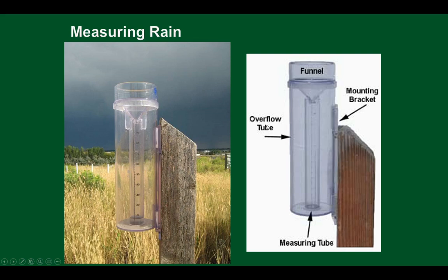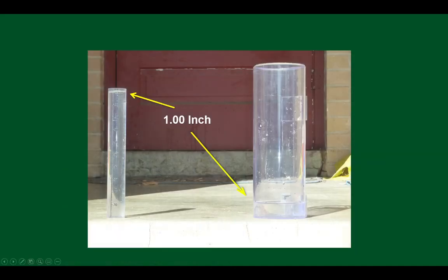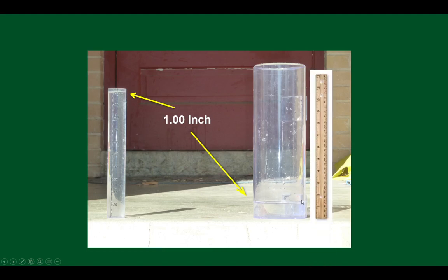What's going on with the funnel is this: if an inch of rain fell into the outer cylinder and you held a ruler next to it, it would come up to about one inch — but it would be really hard to be accurate just sticking a ruler in there. So you pour it into the calibrated inner tube, where one inch of water goes all the way up to where it reads 1.00 inches. There are a hundred tick marks on the inner tube, so you can measure to the nearest hundredth of an inch. If you had half an inch, that would come up to 50.